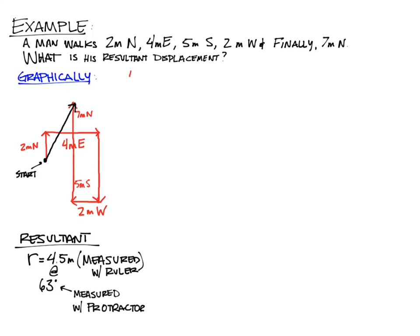We also need to look at this situation algebraically. With algebra, we break it up into what's happening in the x and what's happening in the y. Going 2 meters north is positive 2 meters in y. Going 4 meters east is positive 4 meters in x. Going 5 meters south is negative 5 meters in y. Going 2 meters west is negative 2 meters in x. And 7 meters north is positive 7 in y. We add everything in x together and everything in y together: total in x is 2 meters, total in y is 4 meters.